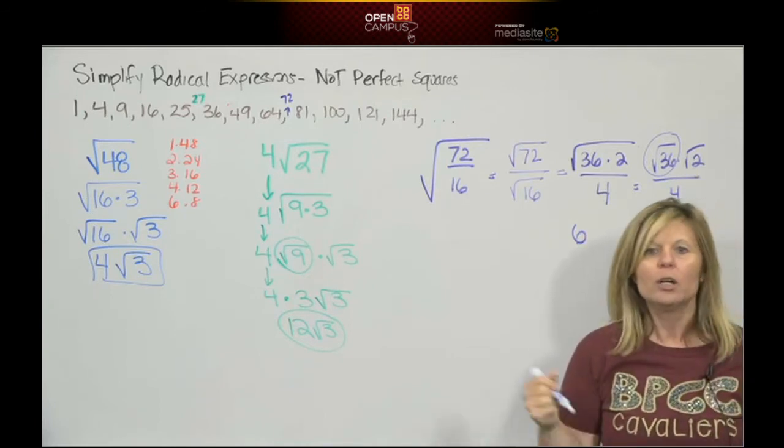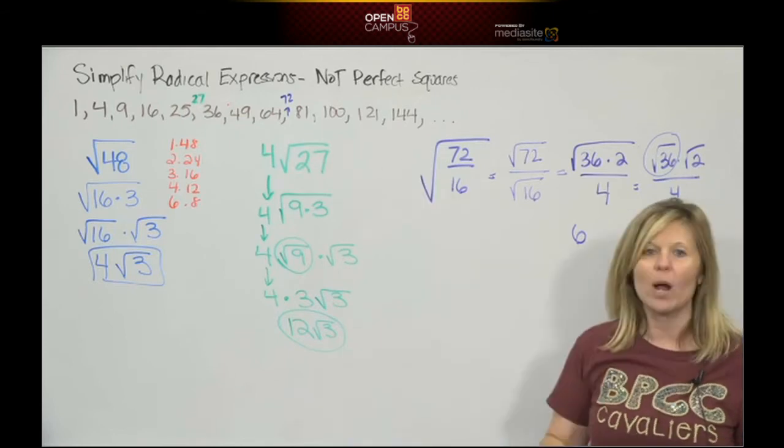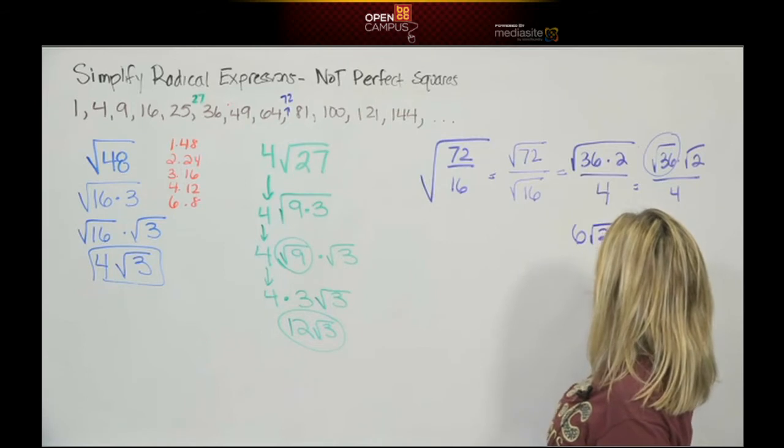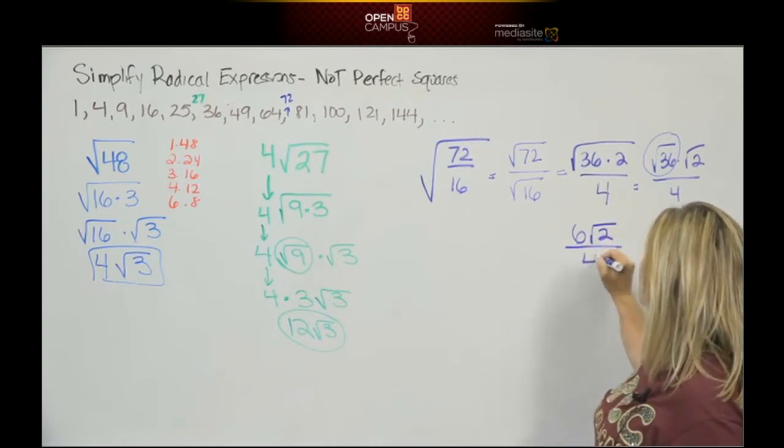Can we square root 2? No. 2 is not a perfect square. 2 is prime. It's in lowest terms. So it cannot square root. We leave it in the symbol. And this is over 4.